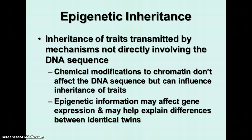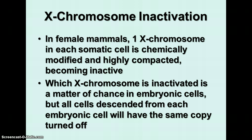Another important topic is X chromosome inactivation. An individual can't survive without at least one X chromosome. Females have two X chromosomes, but both aren't needed — you can get along just fine with one, as we see from the 50% of the population that is male and has only one X chromosome. So in female mammals, one of those X chromosomes in each body cell is chemically modified, highly compacted, and becomes inactive. In humans, you can sometimes see this inactivated X chromosome in cells — it's called a bar body. Which X chromosome is inactivated is basically random in embryos, but all cells descended from that embryonic cell will have the same copy of the X chromosome turned off.